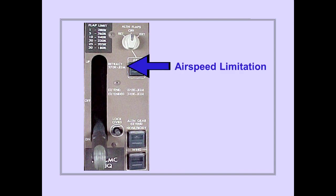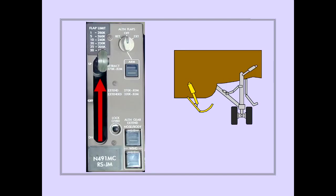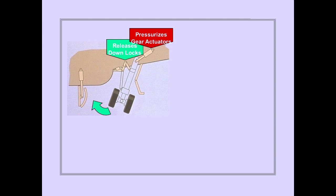The airspeed limitation for gear retraction is 270 knots or 0.82 Mach. This airspeed limit prevents structural damage to the gear doors. Placing the gear lever up pressurizes the gear door actuators to open the gear doors. When the doors are open, hydraulic pressure releases the gear down locks and pressurizes the gear actuators.